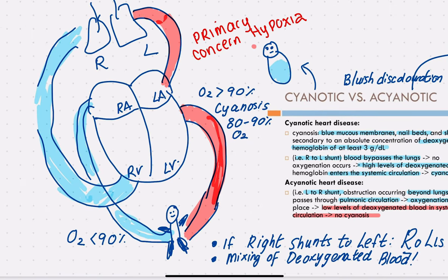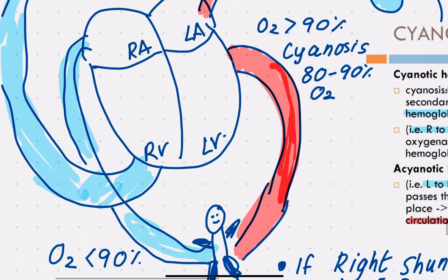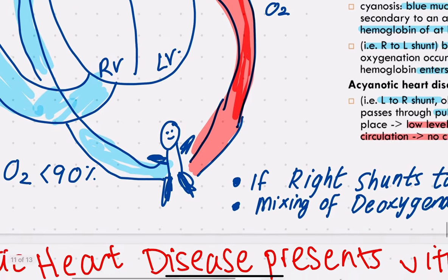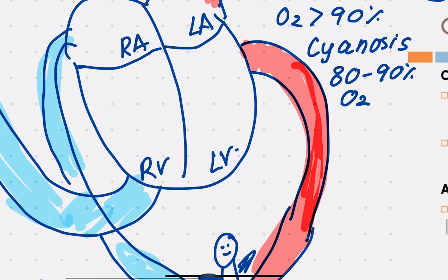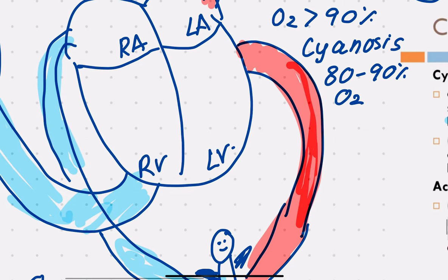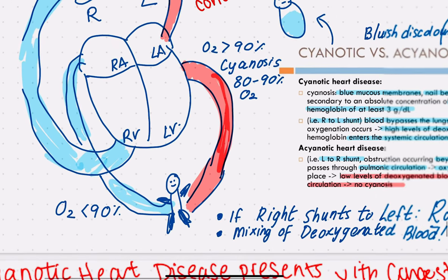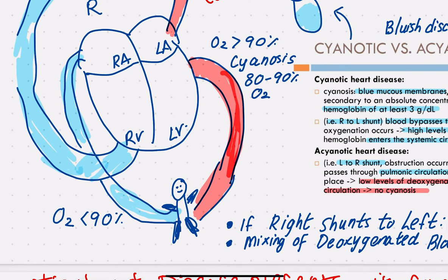The blue blood was entering the heart on the right side and as it left the right side it was going into the pulmonary to enter the lungs. But if there is some fault which causes this right-sided blue blood to mix with the left-sided blood — a right-to-left shunt — that would cause cyanosis.